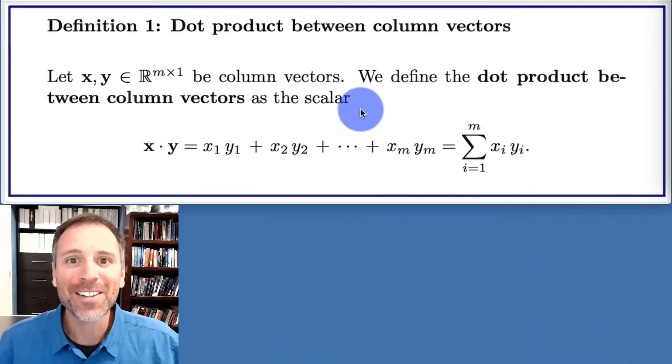On the left-hand side of the screen here, we see the dot product as defined mathematically. We start with two column vectors, x and y, both of which have m rows and one column.